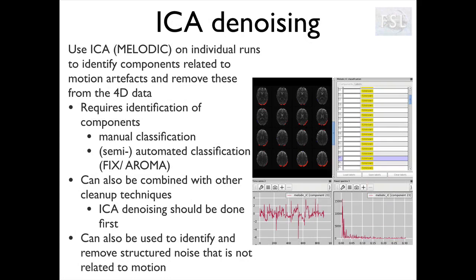Finally, the third option is independent component analysis. This is a technique that is mostly used in resting state fMRI, so you will hear more about ICA in the resting state lecture. I'm briefly mentioning it here because it's used as an additional preprocessing step for artifact removal. Essentially, ICA decomposes the data into a set of components which explain interesting structure in the data, so they can be related to either neuronal signal or to noise. Each component will have a spatial map and a time series associated with it.